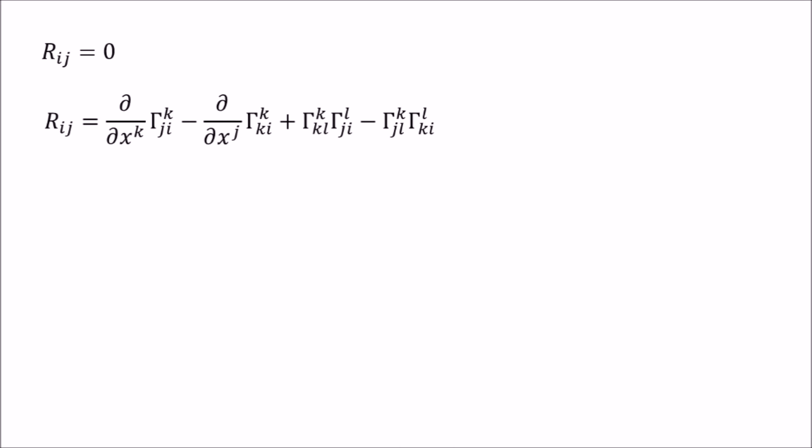Now we must solve this equation in the same limit. We can immediately drop the last two terms because they go as dh squared. Since we are only interested in the gammas with lower indices of 0, we only need to solve this equation. The time derivative is again 0, so finally we end up with this equation.